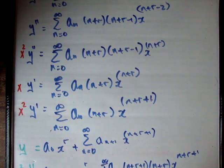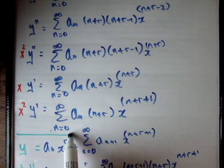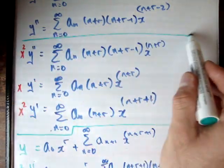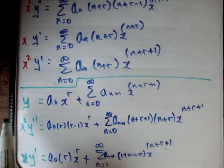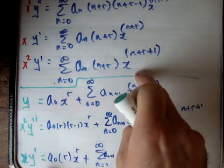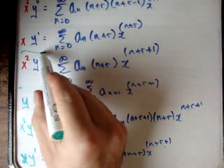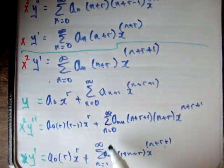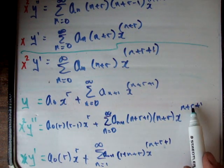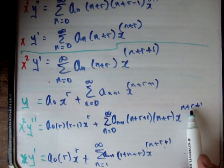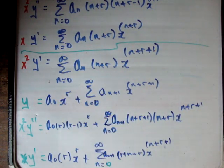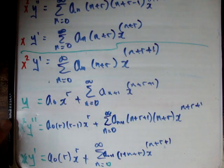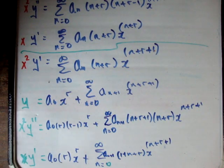These are the four terms we're left with, and if you notice, each one of them has the same power: x to the n plus r plus 1. They all start at n equal to 0 to infinity. For three of them — namely y, x squared y double prime, and xy prime — there's also a leading coefficient term.